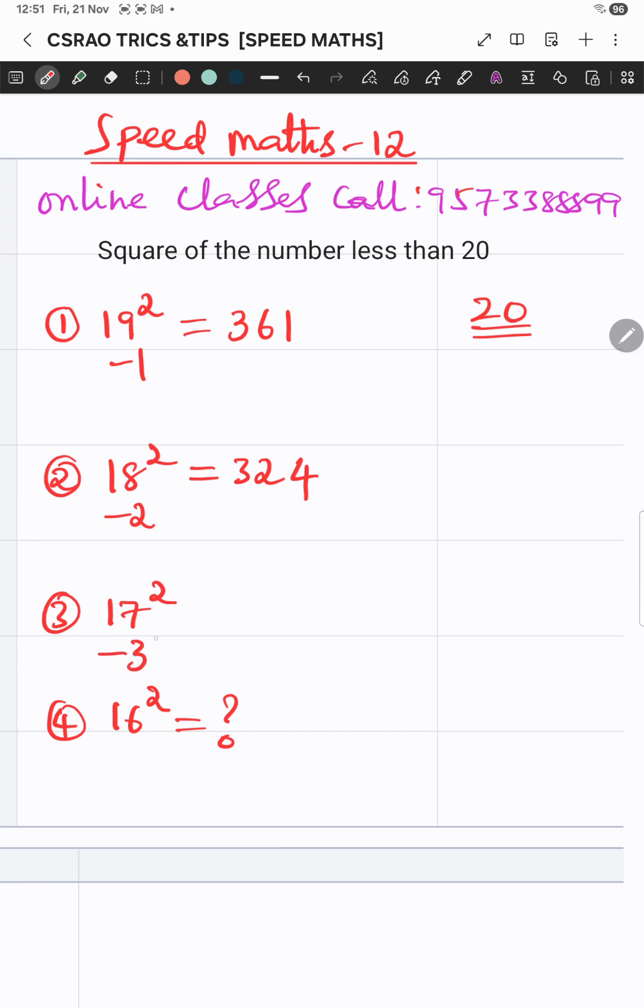17 minus 3 is 14. Double of 14 is 28, and 3 square is 9, so 289. Try this. Thank you.